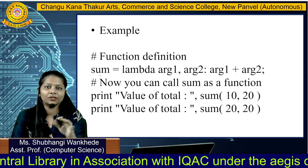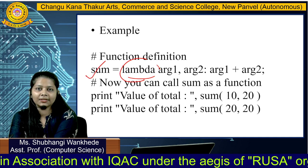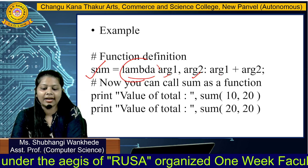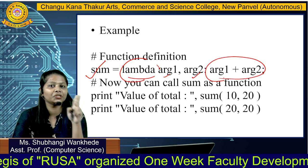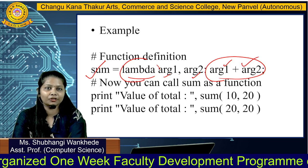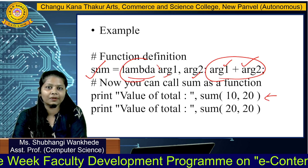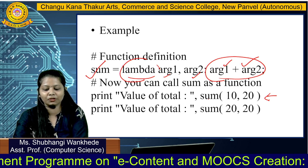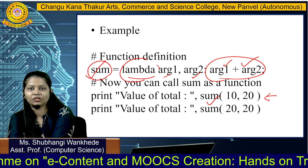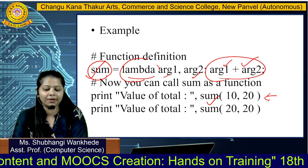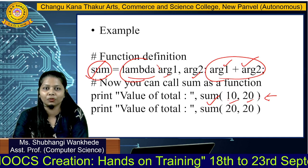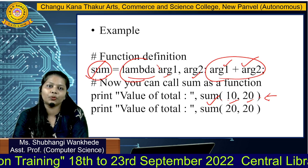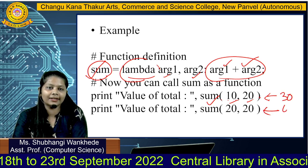In this example, we can see it is an anonymous function because the lambda keyword is used. To the variable 'sum', we have two arguments, arg1 and arg2 — because lambda can take any number of arguments. The expression adds the two arguments together. When we call this anonymous function, we simply call sum with the arguments, since 'sum' acts as the function name. So sum(10, 20) gives output 30, and sum(20, 20) gives output 40.